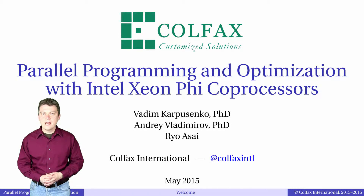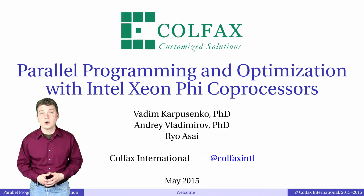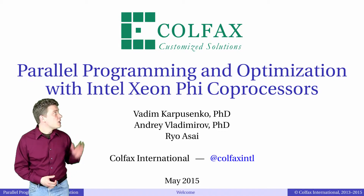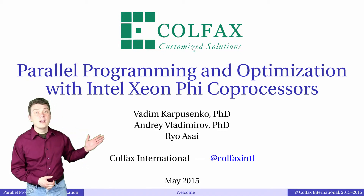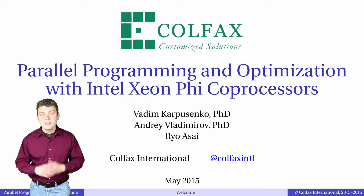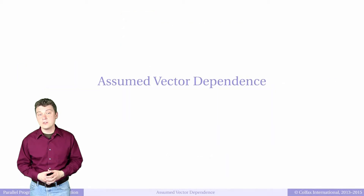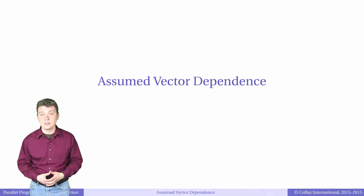Hello! Welcome back to episode 4.3 Assumed Vector Dependence and Pointer Disambiguation of our video course Parallel Programming and Optimization with Intel Xeon Phi Coprocessors. In this episode we will talk about some of the problems you might get while using the automatic vectorization feature of the Intel compilers.